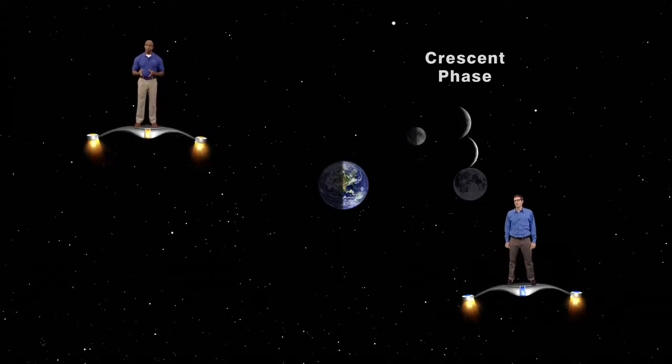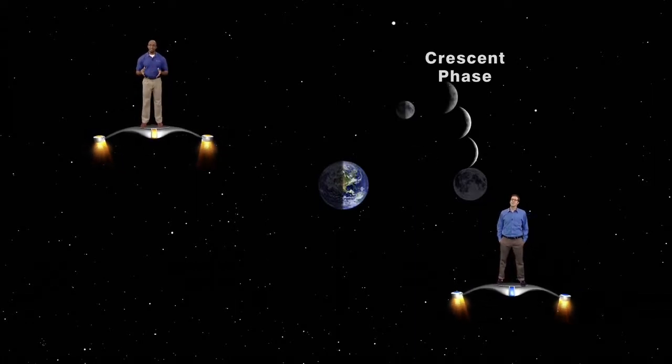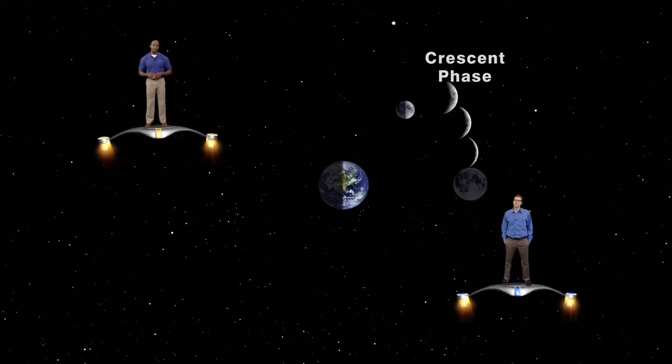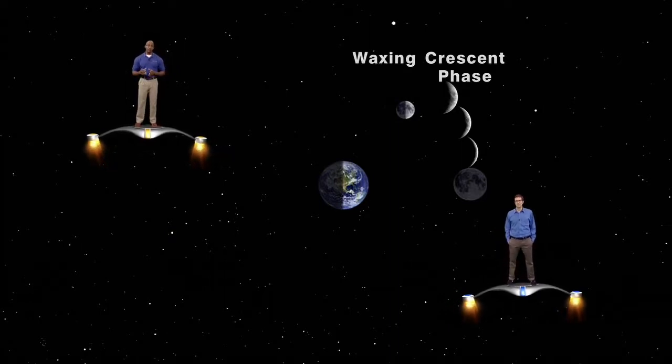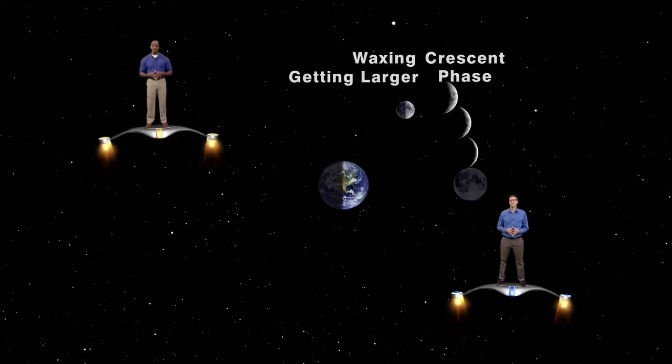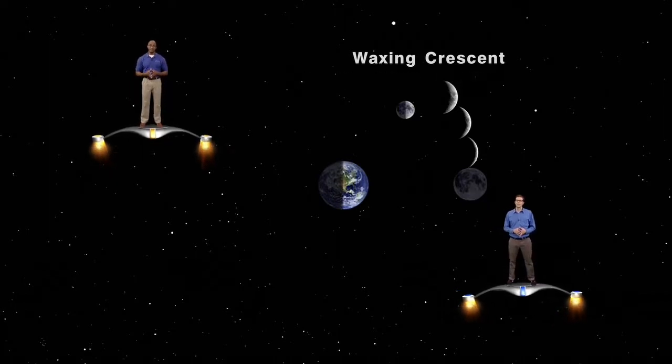As the days pass, we will see more and more of the daytime side, and less and less of the nighttime side. We refer to this as waxing. Waxing means to get larger, so this phase is more precisely called a waxing crescent.